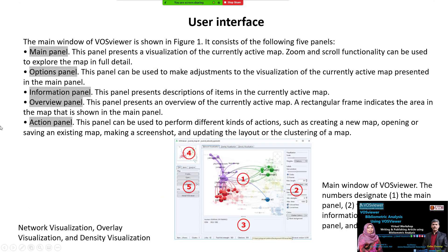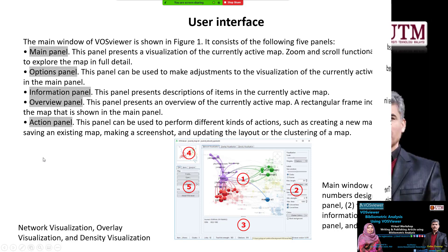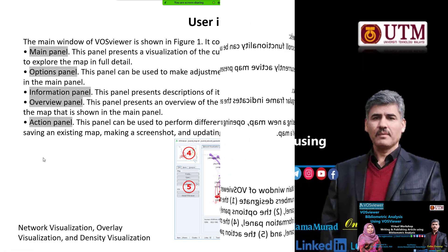To summarize, the three types of visualization available in VOSviewer for bibliometric analysis are: network visualization, overlay visualization, and density visualization.